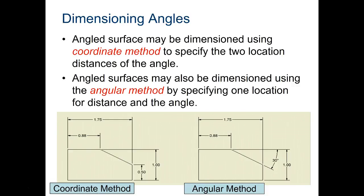There are two ways of dimensioning angles, the coordinate method and the angular method. We will use only the coordinate method unless it's absolutely necessary to use this angle.